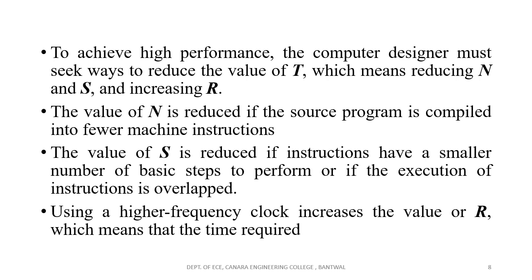Considering the basic performance equation, to achieve higher performance the computer designer has to reduce the value of T. Lesser T means faster execution, which means we need to reduce N and S and increase R. However, there is a limitation in increasing R — the clock rate — because it is dependent on the hardware present in the computer system, and the hardware has its own limitations in terms of operating speed.